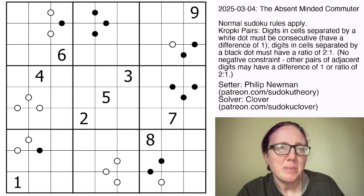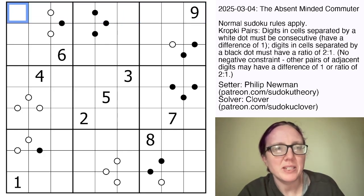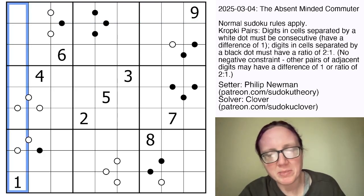So this is a Kropke Paris Sudoku, so we're placing the digits 1 through 9, once each in each row, each column, and each outlined 3x3 region. And then we also have some dots in the grid, some of them are black, some of them are white.